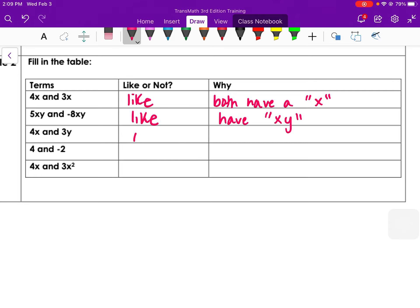4x and 3y are not. One is an x and the other is a y. 4 and negative 2 are like terms. They are called constants. They have no variables.